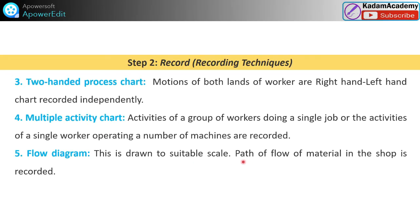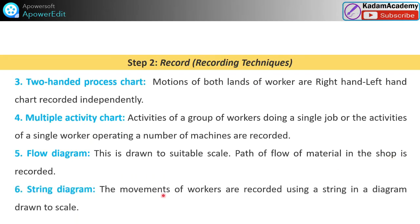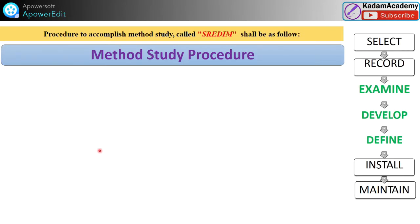The Flow Diagram is drawn to a suitable scale showing the path and flow of material in the shop. The String Diagram records movements of workers by using string in a diagram drawn to scale — by using strings you can draw these diagrams.